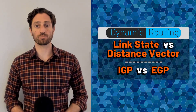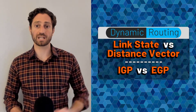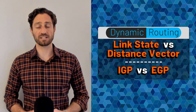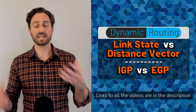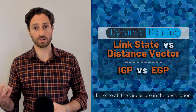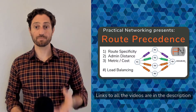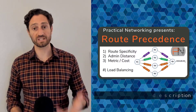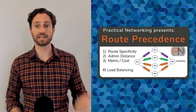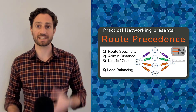You'll also want to check out my overview of dynamic routing protocols, where we unpack the ideas of EGPs and IGPs, and distance vector protocols and link state protocols. And finally, my routing precedence video, where I discuss how a router chooses its best path and demonstrate the effects of admin distance and metrics. Once you've checked out those videos, you'll be ready to dive into the practical OSPF series.